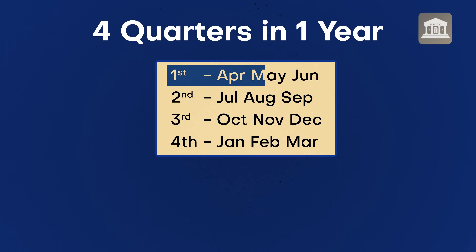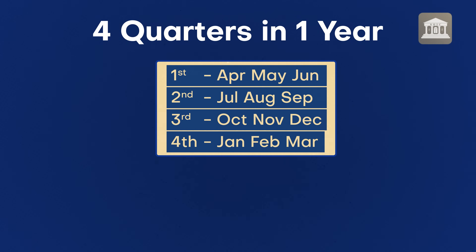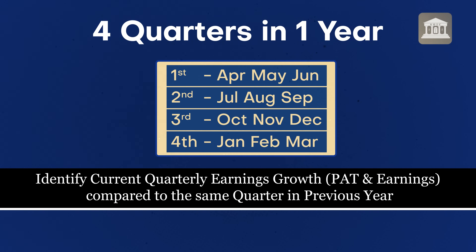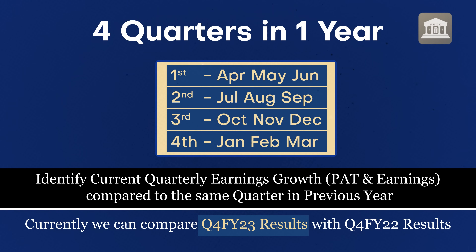In a year there are four quarters: Q1 is April–June, Q2 is July–September, Q3 is October–December, and Q4 is January–March. When he talks about current quarterly earnings growth, he's asking us to identify the growth of quarterly profit after tax and quarterly sales growth compared to the previous year. For example, recently in India we finished Q4 FY23 results, so we compare Q4 FY22 with Q4 FY23.